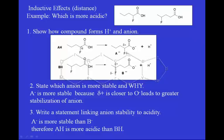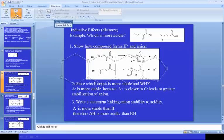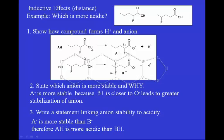We draw out the anions by taking the H off the oxygen and leaving a negative charge on the O. The reason we take H off the O rather than a C is that O- is more stable than C- because oxygen is more electronegative and better able to stabilize the negative charge. So we know H comes off the O leaving the negative charge there. A minus is more stable because the delta plus is closer to the O minus, which leads to greater stabilization of that anion.